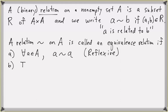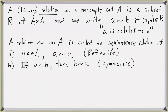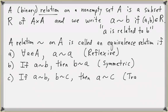First, for every element a in A, a is related to a — this is called the reflexive property. Second, if a is related to b, then b is related to a — so the relation is symmetric. And the third condition: the relation is transitive — if a is related to b and b is related to c, then a is related to c. A relation with all three characteristics is called an equivalence relation.